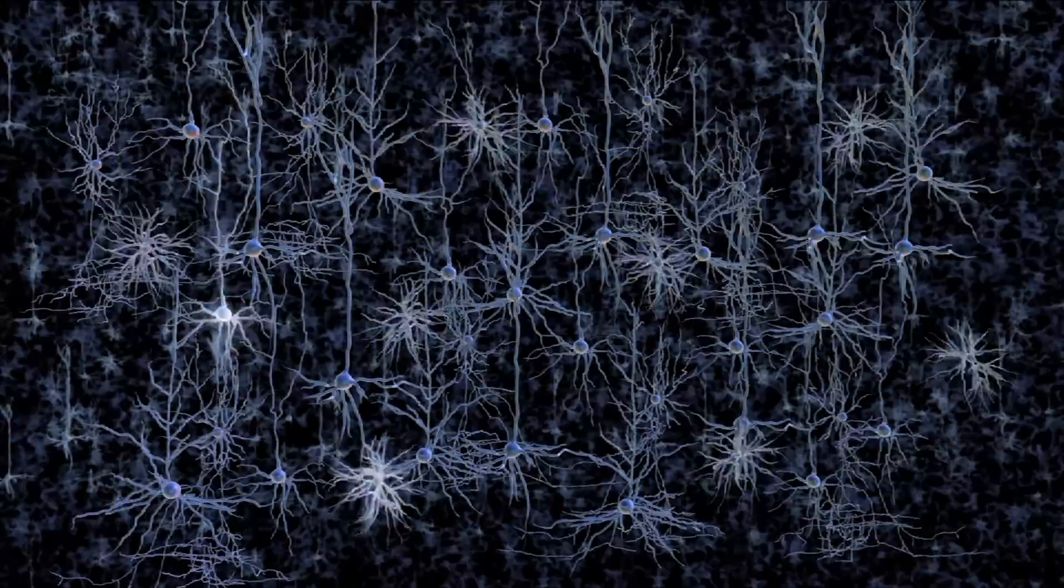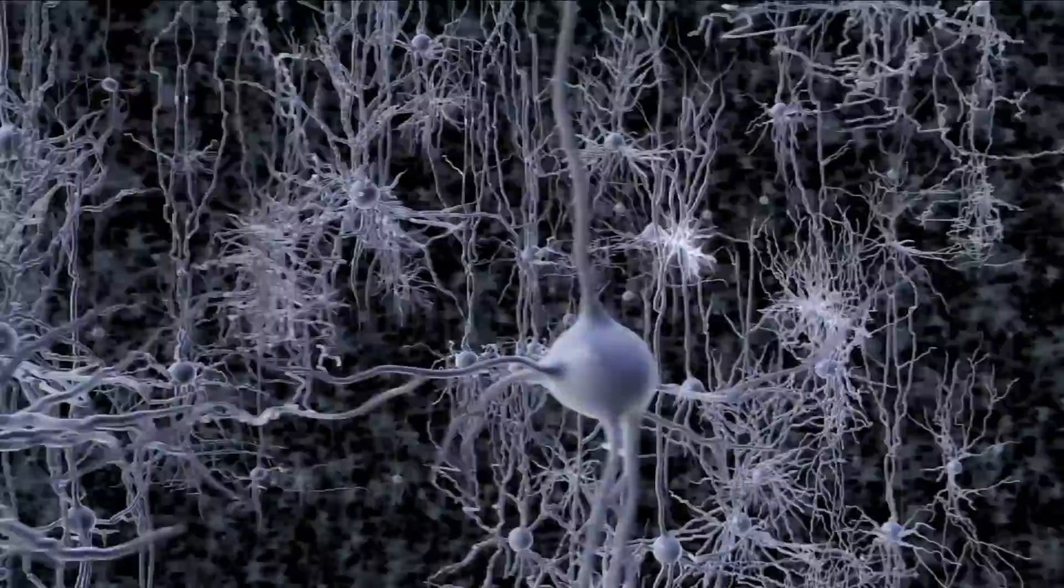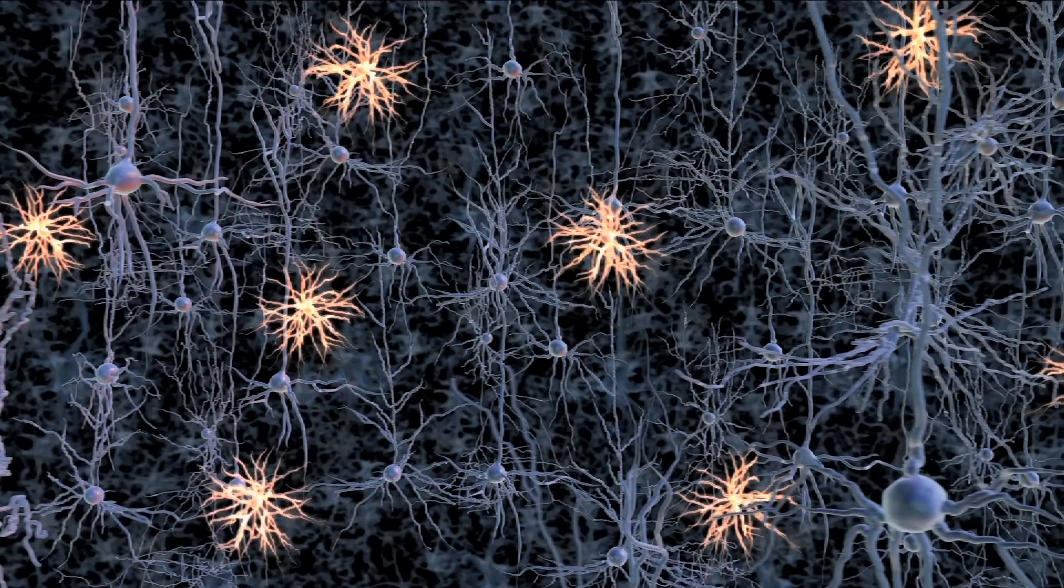Neurons come in thousands, perhaps tens of thousands of different kinds, each with a unique shape, a distinct molecular composition, and a unique pattern of connections within the brain. For example, these cells, the basket cells, have small input branches and output branches and they release pulses of chemical that inhibit their targets.